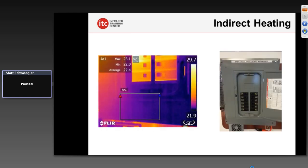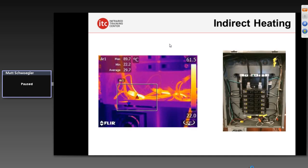Check out this small panel board we have in our lab. On the outside you can see the surface temperature of the box — about 22 degrees Celsius, around 74-75 Fahrenheit. You don't really see much at all. If I take that cover off, there's a connection inside that's well over — look at that, 89 degrees — that's the maximum temperature on that connection. That's a very significant problem if you were to find it in the field. But you need that direct line of sight to see that.